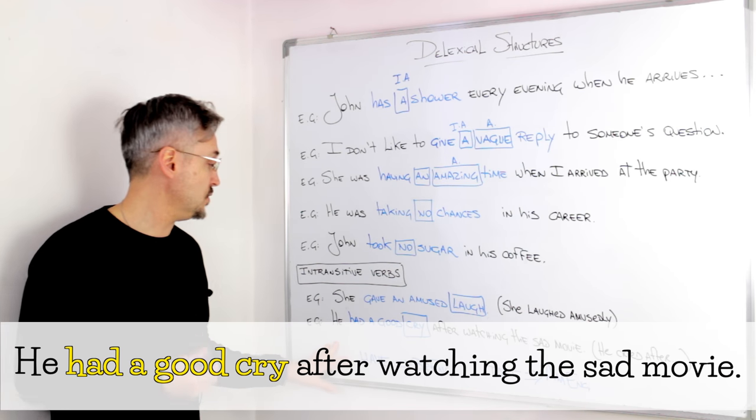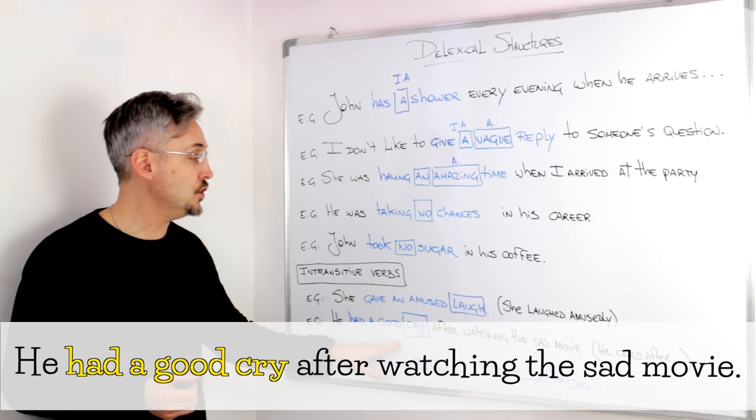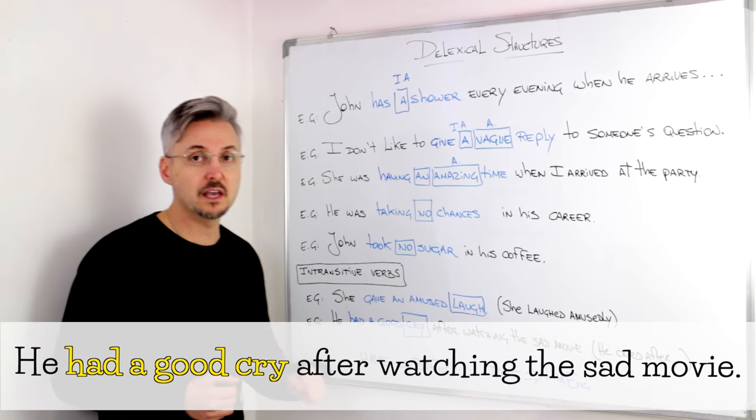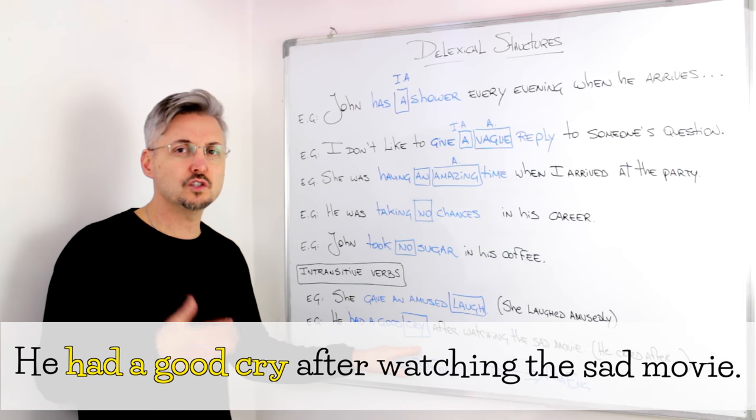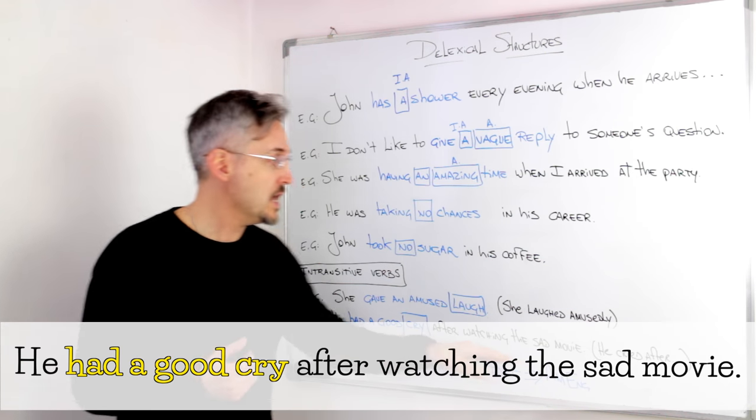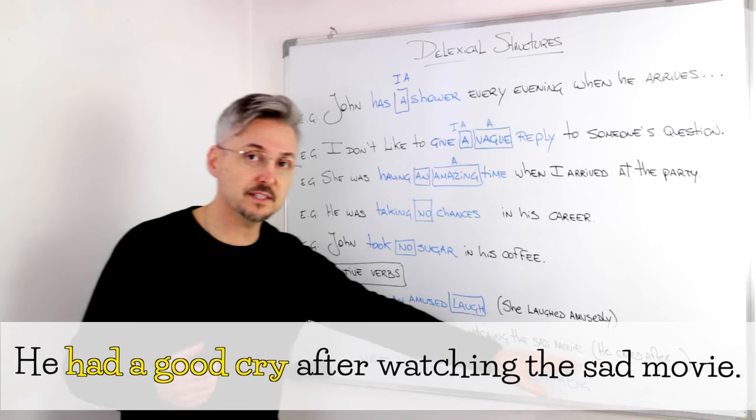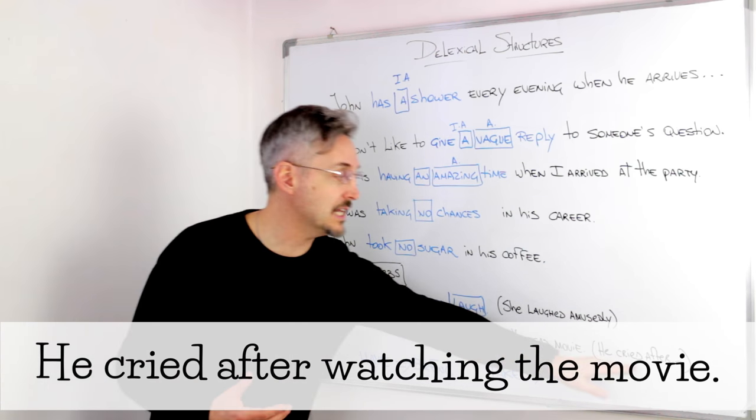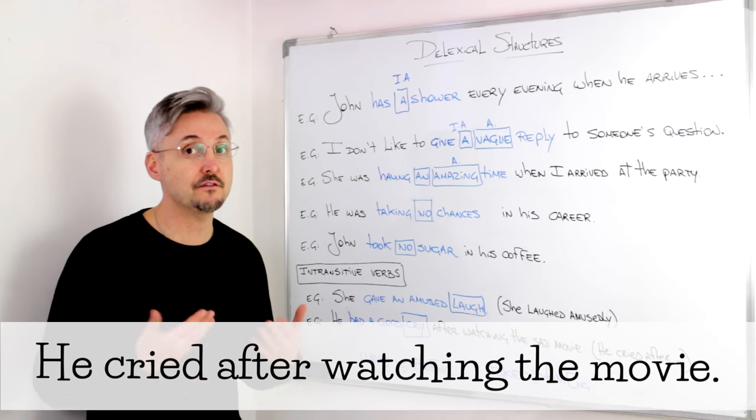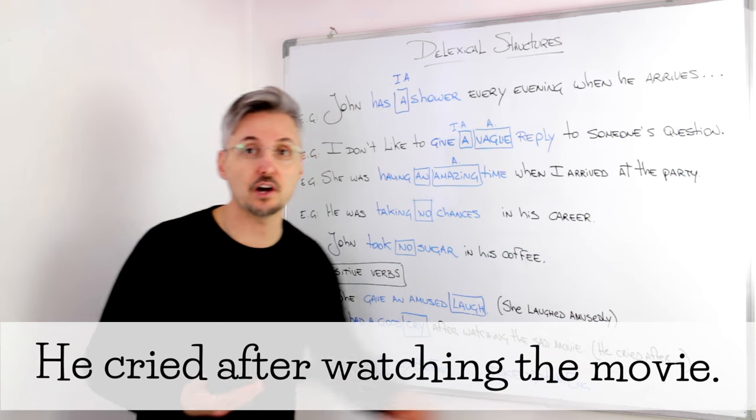Now, another example could be, he had a good cry after watching the sad movie. In this case, cry is the noun. But if I wanted to make it into a verb, I would have said, he cried after watching the movie. And in this case, cry is an intransitive verb because it doesn't take an object.